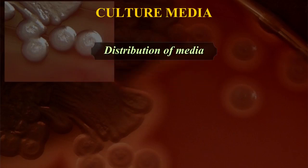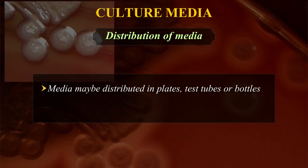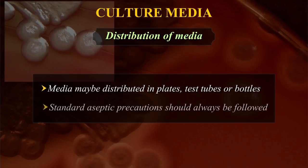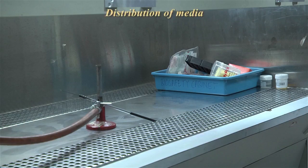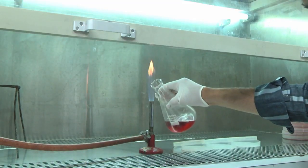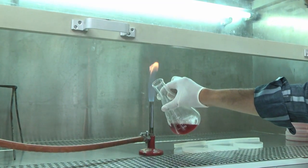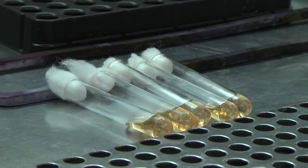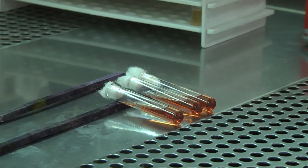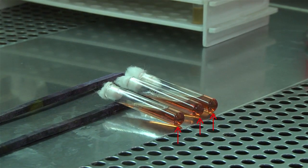Distribution of media: Media may be distributed in plates, test tubes or bottles. Standard aseptic precautions should always be followed. It is preferred to work within an inoculation hood or cabinet filled with a filtered air supply. Always heat the mouth of the container from which the medium is being poured in a flame. For making a slant or a slope, the tubes have to be laid at an angle which allows the slant to be formed. The medium is poured such that there is a thick butt at the bottom, providing a large surface area for inoculation.